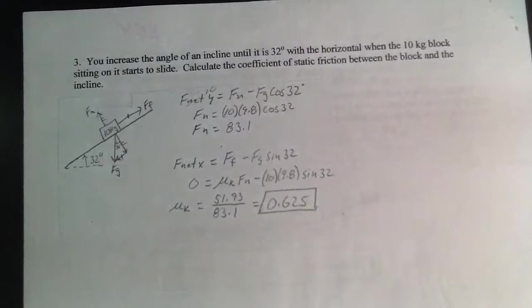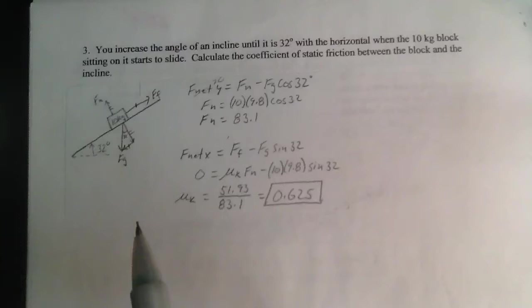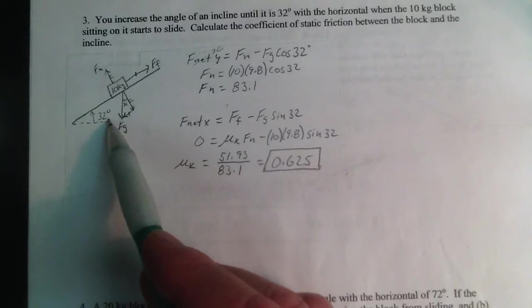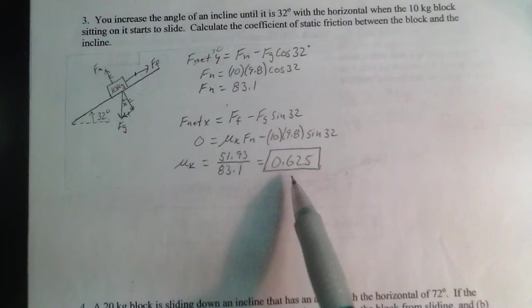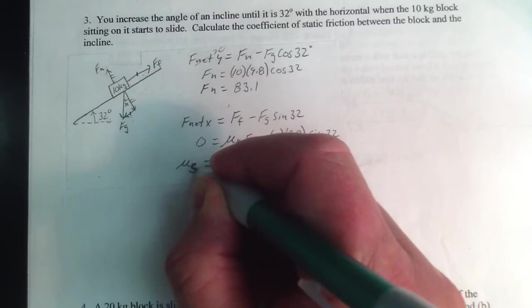Yet another sliding block problem. What's different about this one? I need you to recognize it just starts to slide, so this is going to be an equilibrium problem. As long as this angle remains 32 or less, this vector and this vector are going to be equal. So I'm back calculating this. I got my force normal, knowing here and here I'm in equilibrium. Then I get mu_s, coefficient of static friction, as it has not started to slide.